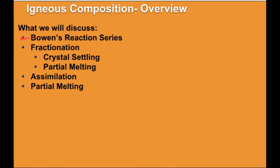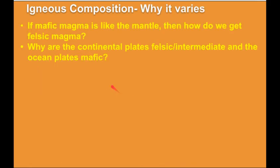What we'll be discussing is Bowen's reaction series, fractionation including crystal settling and partial melting, and assimilation. If mafic magma is like the mantle, then how do we get felsic magma — the more silica-rich magma? And why are continental plates felsic and intermediate, while ocean plates are more mafic, like the mantle? These are some of the questions we'll try to address today with why the composition varies in magma.